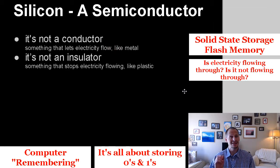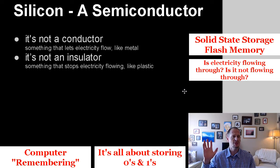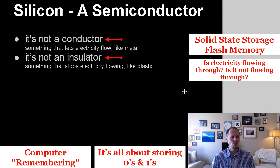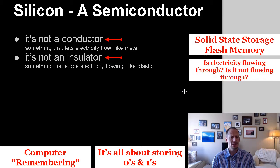Silicon is a semiconductor because it neither fully conducts electricity — letting it all the way through — nor completely resists it. It has a property right in the middle: it doesn't really conduct and doesn't really insulate. That's an important property, because it's going to allow us to create a device where electricity will sometimes be able to flow through it and at other times won't.